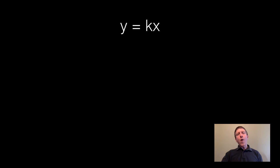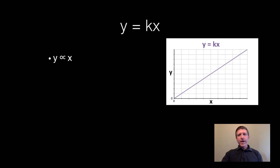So first we have y equals k times x. Our variable y, which is typically the dependent variable, equals some constant k times our independent variable x. Another way of writing this is simply y is proportional to x. If you double x that means y will double. Here's a graph of y equals kx. You can see it's a straight line and it goes through the origin zero zero.